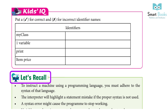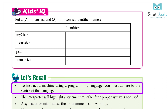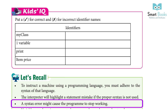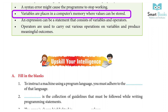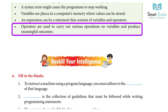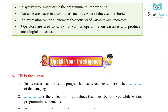Let's recall: To instruct a machine using a programming language, you must adhere to the syntax of that language. The interpreter will highlight a statement mistake if the proper syntax is not used. A syntax error might cause the program to stop working. Variables are places in a computer's memory where values can be stored. An expression consists of variables and operators. Operators are used to carry out various operations on variables and produce meaningful outcomes.